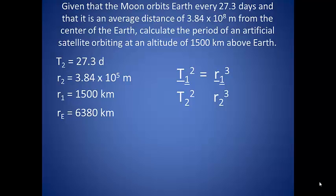The orbiting distance of the satellite then becomes the altitude plus the radius of the Earth. So we take our 6,380 kilometers, and we add our 1,500 kilometers, and we get 7,880 kilometers as our distance from the center of the Earth to our orbiting satellite.